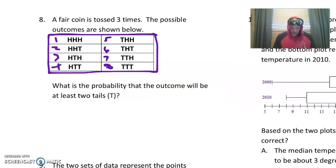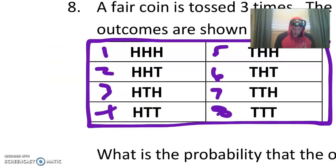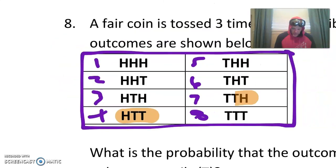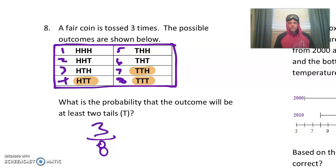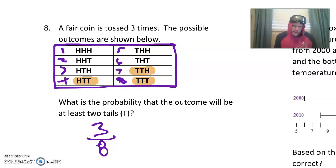What is the probability that the outcome will be at least two tails? We're looking for outcomes that have two T's in them. Heads, tails, tails — that's got two tails. Tails, tails, heads — that has two. And the last one, tails, tails, tails. So that's three out of eight. Three out of eight. Don't overcomplicate it — it's actually a super simple question, it just looks kind of funky.